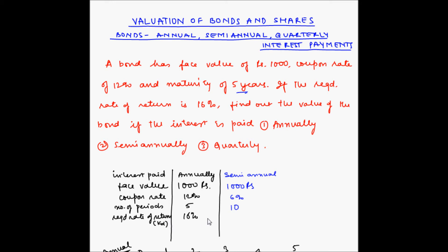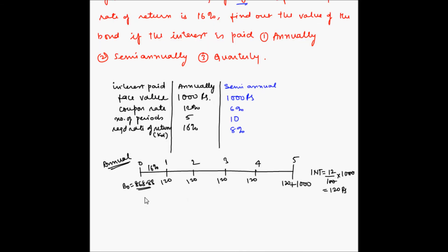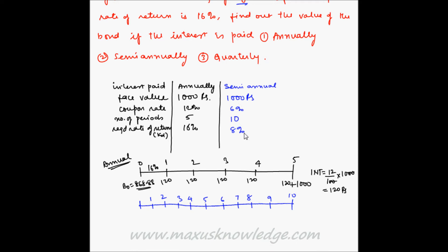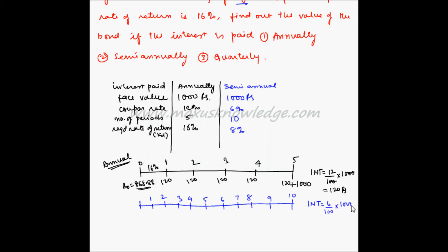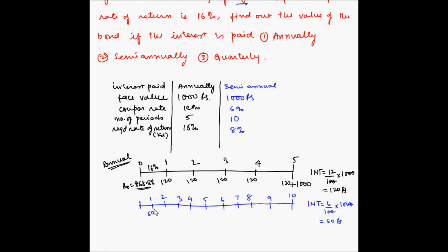The required rate of return is also annual, so half-yearly it will be half, making it 8%. Let me draw the time scale for semi-annual payments. Each year has been broken down into two periods, so in total we have 10 periods. Interest is 6% of the face value, so interest is 6 divided by 100 into 1000, which gives 60 rupees.